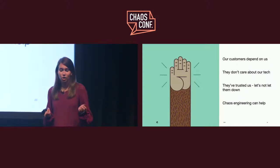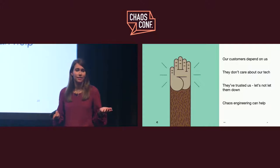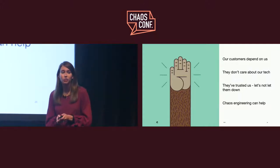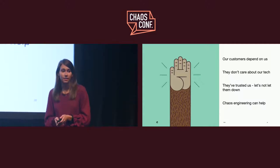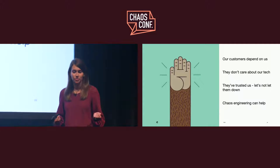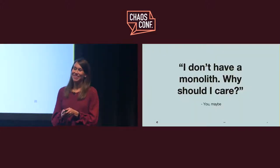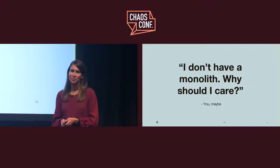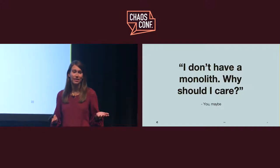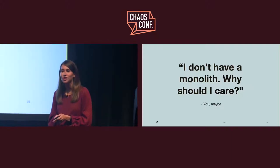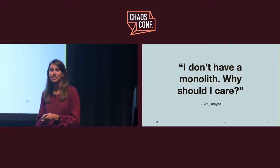Chaos engineering won't get rid of incidents — that's impossible, we're always going to have something — but it can reduce the frequency and severity. And that's true no matter what your architecture looks like. So even if you don't have a monolith, this talk is still for you. Because of the unique constraints put on us by our architecture, we've had to apply particular creativity and persistence to make chaos engineering a reality.